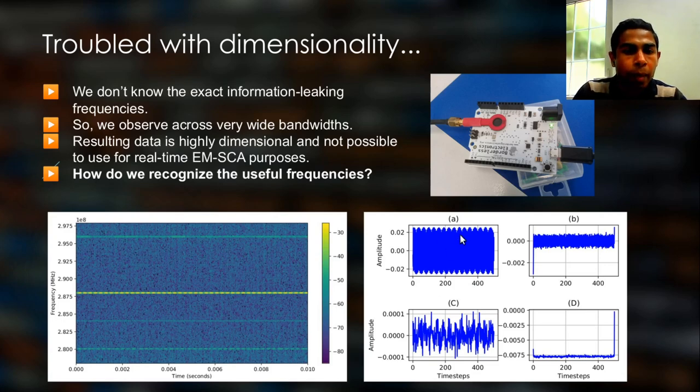As shown in these waveform plots, different randomly selected channels have a unique signal pattern. But we don't know which of them leaks useful information. Some of them can be just noise, while some of them can be legitimate information leaking channels. Now this is the problem we are tackling in this research. How do we recognize the information leaking useful channels among all the thousands of channels that we have acquired?